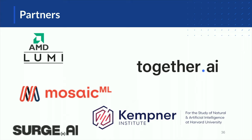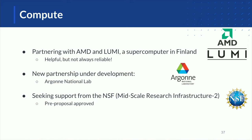This project required a lot of compute and still requires a lot of GPUs. We are partnering with AMD and Lumi, Mosaic ML, and Kempner, an institute at Harvard. For data and inference, we are partnering with Together AI and also Surge AI for data. We are currently training using compute from AMD and Lumi, and also trying to make a new partnership with Argonne National Lab, as well as seeking support from NSF through a research infrastructure grant.